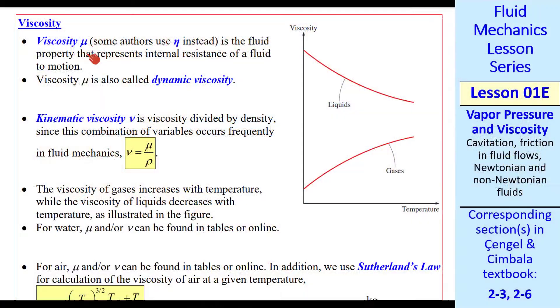Now let's talk about viscosity. Viscosity is given the symbol mu, although some authors use eta. We'll use mu. It's the fluid property that represents internal resistance of a fluid to motion. Some people call it dynamic viscosity. Its dimensions are mass over length over time. Typical units are kilogram per meter second, or P, which stands for poise, or CP, which stands for centipoise. We'll always use these units.